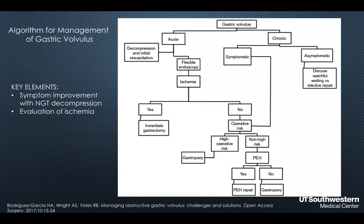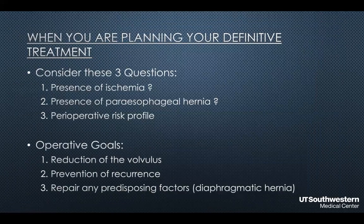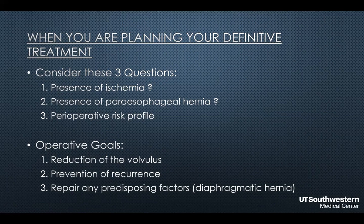Rodriguez and colleagues put together a nice algorithm for management of gastric volvulus, dependent on symptom improvement with NG tube decompression and the ability to evaluate for gastric ischemia via flexible endoscopy. Management is dependent on acute versus chronic presentation, presence of ischemia, and the patient's perioperative risk. When planning definitive treatment, consider three questions: Is there ischemia? Is there a paraesophageal hernia? And what is the patient's perioperative risk profile? Operative goals include reducing the volvulus, preventing recurrence, and repairing predisposing factors like a paraesophageal or diaphragmatic hernia.